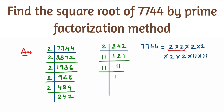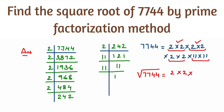Let's start pairing these up. A pair means one set of two same factors. So we have one pair of 2s, another pair of 2s, another pair of 2s, and a pair of 11s. When calculating the square root, from each pair we take one factor. So we take one 2 × one 2 × one 2 × one 11. That gives us 2 × 2 = 4, 4 × 2 = 8, 8 × 11 = 88. So the answer is 88.